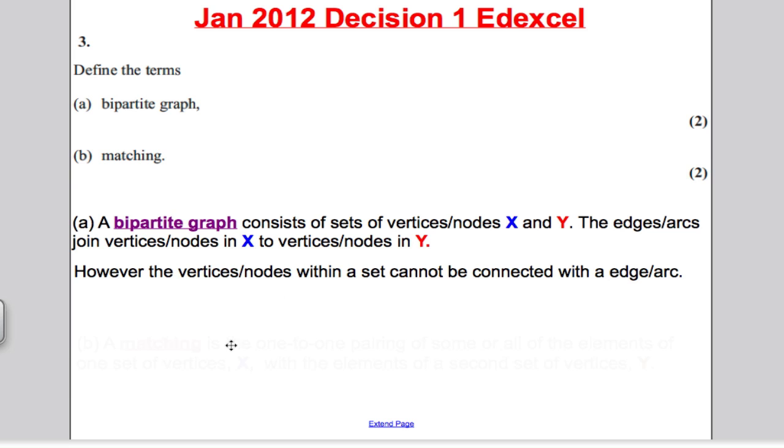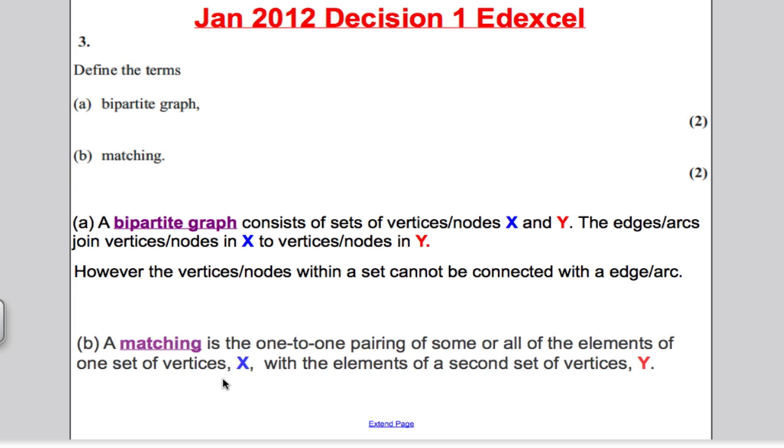And part B, let's take a look at the answer. A matching is the one-to-one pairing of some or all of the elements of one set of vertices X with the elements of a second set of vertices Y. And to get your two marks there, you had to talk about the one-to-one pairing, and then you had to say some or all of the elements of X with some or all the elements of Y.